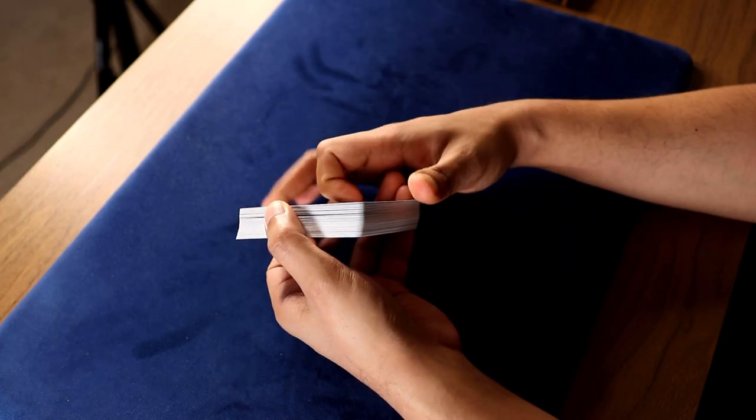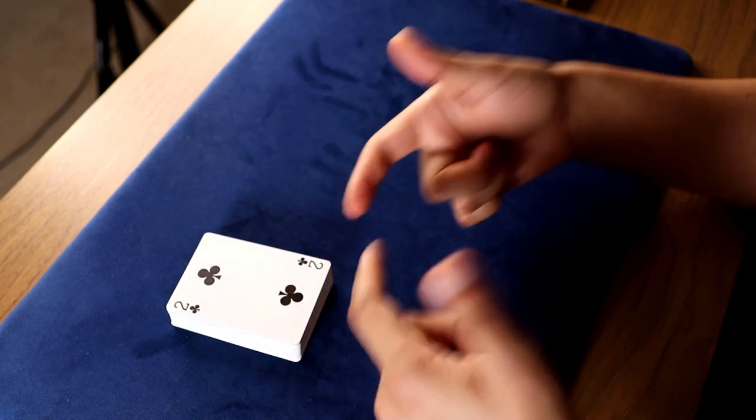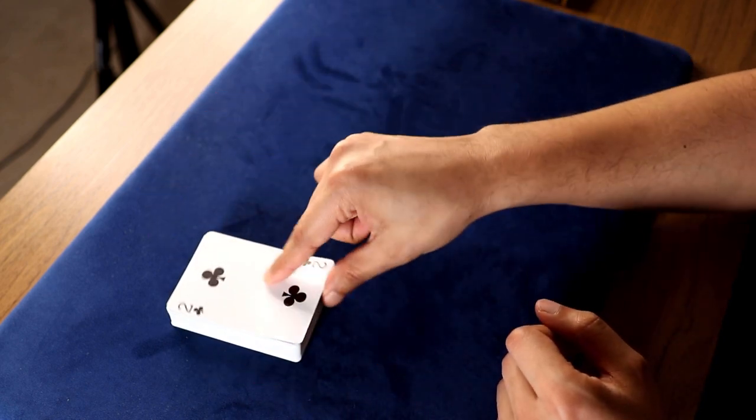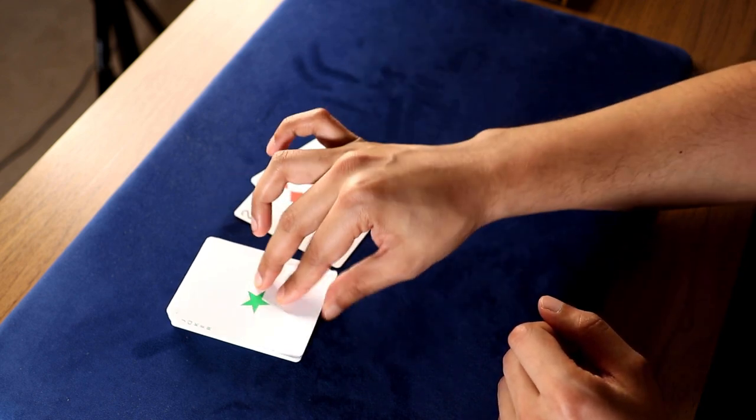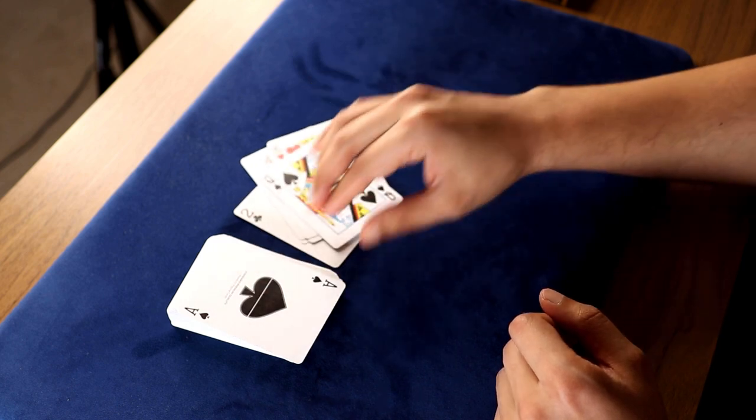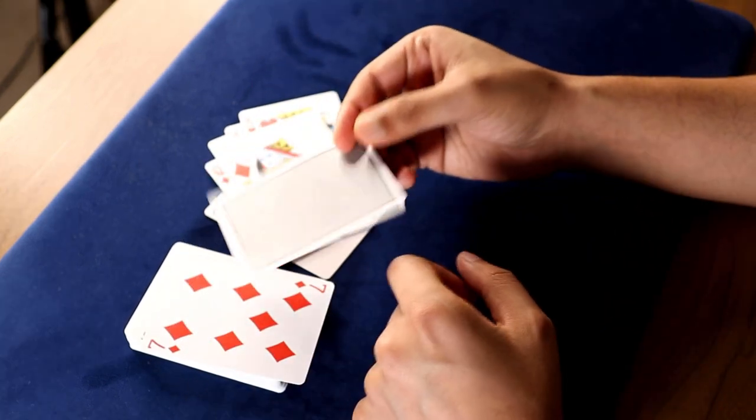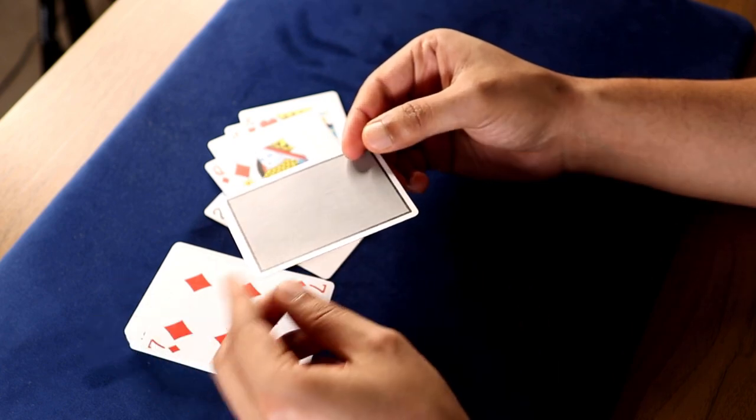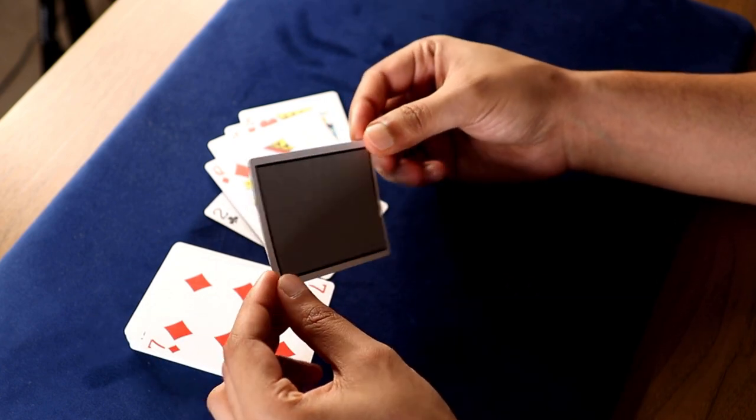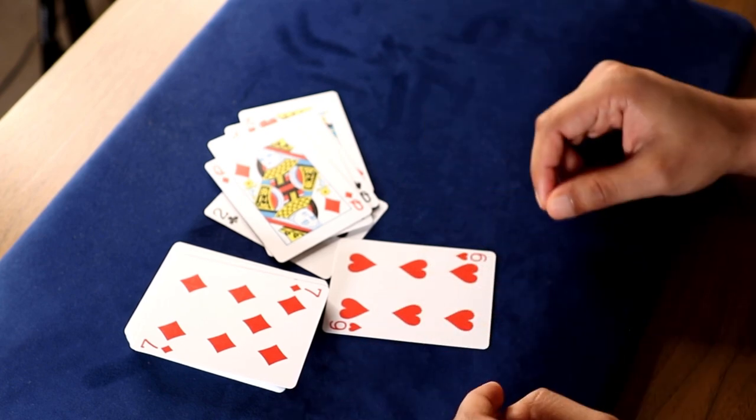They say it was 10. At this point, you can hand the deck over to the spectator and have them count off 10 cards. 1, 2, 3, 4, 5, 6, 7, 8, 9, and look at that. One face-down card at the number that they picked. And there it is, their card, the Six of Hearts. Any card at any number.